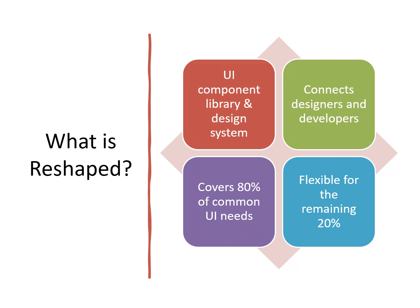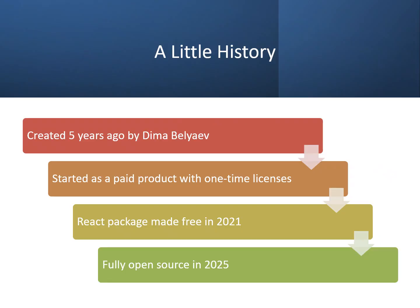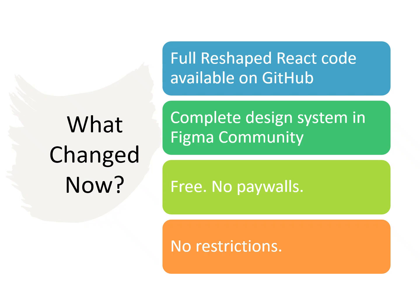Let's look at a little history. Reshape was created about five years ago by Dima Believ. It started as a way to speed up his own projects. At first it was a paid product with a one-time license. Later, the React package was released for free, and now in 2025, Reshape has gone all in, making both the React code and Figma library completely open source.